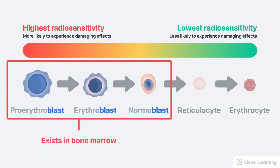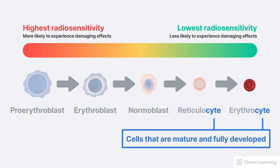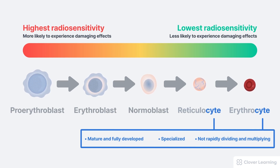These immature blast cells all exist in the bone marrow, which is why marrow is considered very radiosensitive. Reticulocytes and erythrocytes both have the suffix 'cyte,' which refers to cells that are mature and fully developed — specialized and not rapidly dividing. These mature blood cells are not as radiosensitive; they're not as prone to death and mutation from radiation exposure. They're more sensitive than some cells, but less sensitive compared to immature blood cells.